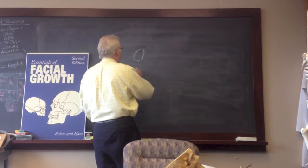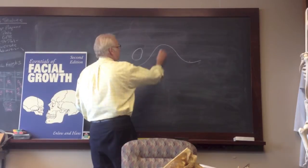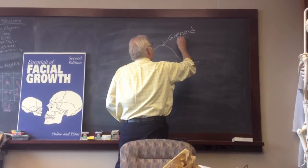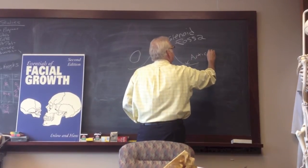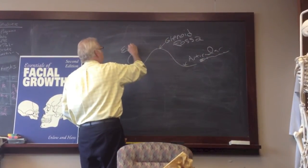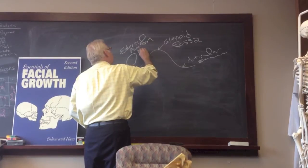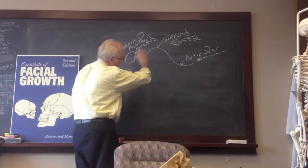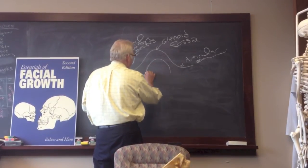We have the external auditory meatus, then the glenoid fossa and the articular eminence — here's the glenoid fossa and a little bump called the articular eminence, and here is the external auditory meatus. To this we're going to add the mandibular condyle — here we have the condyle, the mandibular condyle, and we're just going to look at the neck of the condyle.